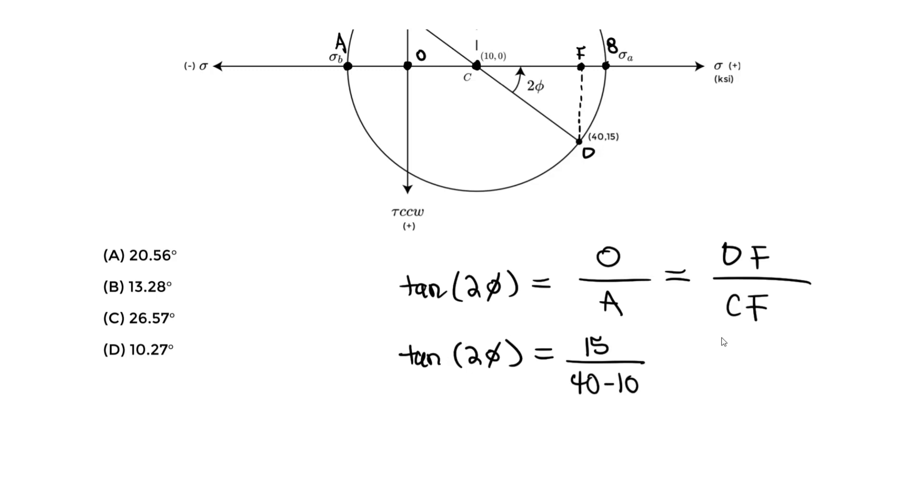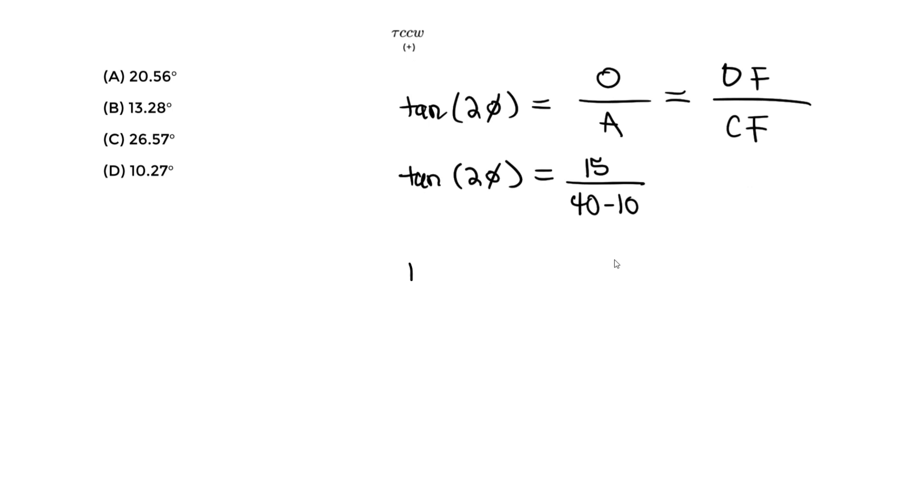So now we're solving for 2φ. So we do the tan inverse of, which essentially equals to 2φ, which is what we're going to find. We do the 15 over the 30. So now we can solve for 2φ. And for that, we should get around 26.57 degrees.